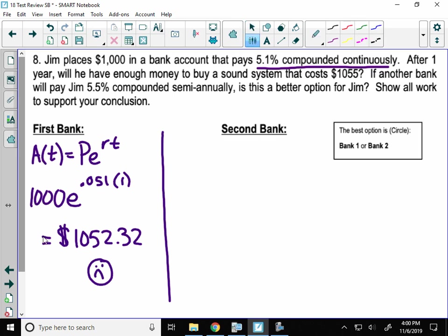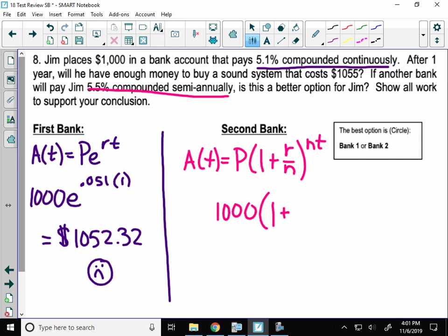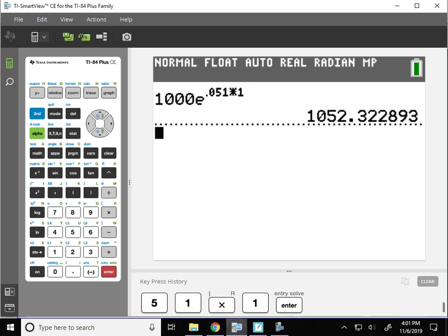His second bank gives him 5.5% interest compounded semi-annually. So remember, just like 6 and 7, semi-annually is this formula. So let's see. He still starts by putting $1,000 in. His interest rate has gone up to 5.5, so it's .055. Semi-annually means you take interest twice a year, and you'll take interest twice a year for one year. And let's see how much money this bank will give Jim.